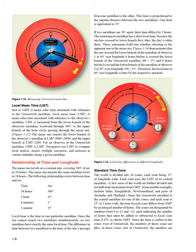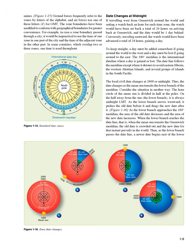Standard Time Zone. The world is divided into 24 zones, each zone being 15 degrees of longitude wide. Each zone uses the LMT of its central meridian. A few areas of the world use half-hour increments from GMT, including India, Bangladesh, Newfoundland, and parts of Australia and Thailand. The time in each zone differs from GMT by an integral number of hours. The zones are designated by numbers from 0 to 12 and minus 12, each indicating the number of hours to add or subtract to local zone time (LZT) to obtain GMT. Since time is earlier in zones west of Greenwich, those zone numbers are plus; in zones east of Greenwich, the numbers are minus. The zone boundaries have been modified to conform with geographical boundaries for greater convenience.